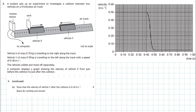Question 3 from section 2 of the 2018 higher physics examination - it's a momentum question. A student sets up an experiment to investigate a collision between two vehicles on a frictionless air track. Vehicle X of mass 0.75 kilograms is traveling to the right; vehicle Y of mass 0.5 kilograms is traveling to the left with a speed of 0.30 meters per second. The vehicles collide and move off separately. A computer displays a graph showing the velocity of vehicle X from just before to just after the collision, and we're asked to find the velocity of vehicle Y after the collision.